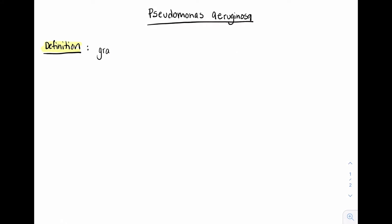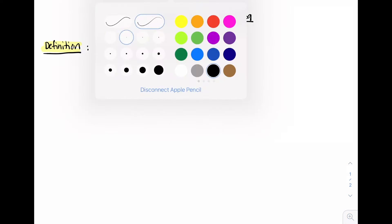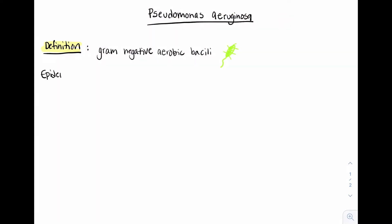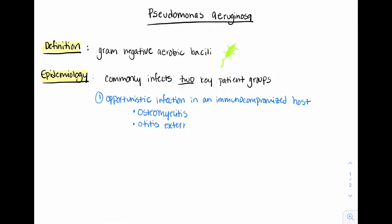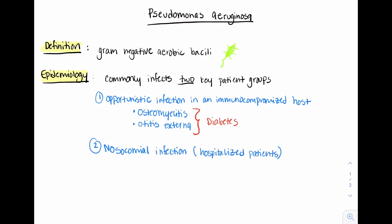Pseudomonas is a gram-negative aerobic bacilli that is found ubiquitously in the environment. It can cause a wide range of infections, but two important groups of patients commonly seen on the ward include opportunistic infections in the immunocompromised host — such as osteomyelitis and otitis externa, often in patients with diabetes — and nosocomial infections in hospitalized patients, including pneumonia, urinary tract infections, and line infections.